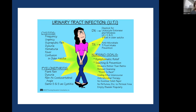Pyelonephritis is a kidney infection. Signs include flank pain in the mid-lower back, dysuria, and pain at the costovertebral angle, plus the same symptoms as cystitis. If the UTI originated from poor hygiene or not voiding after intercourse, and it has now progressed to pyelonephritis, the bacteria has traveled up the ureters into the kidneys — at that point, we have a serious problem.